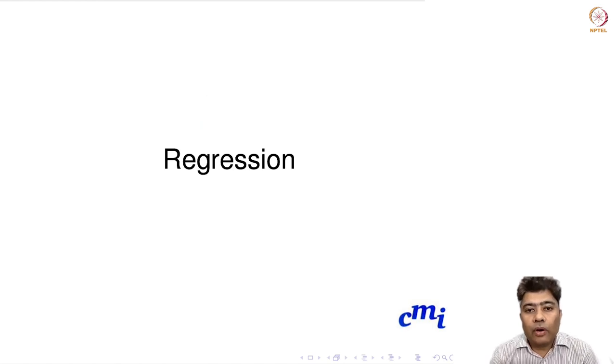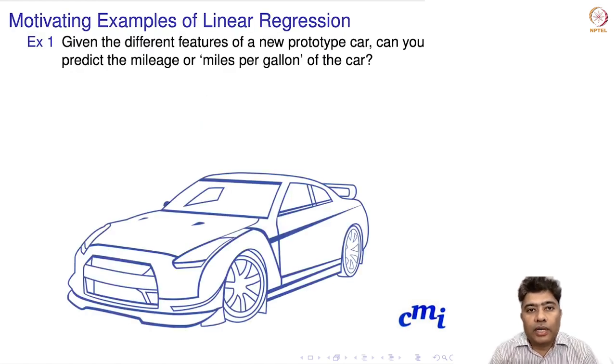Welcome back. We're continuing on regression examples using the MPG cars dataset. Given different features of a new prototype car, can you predict the mileage or miles per gallon of the car?